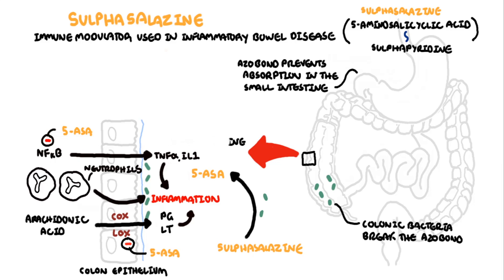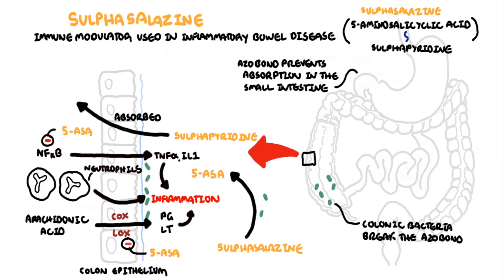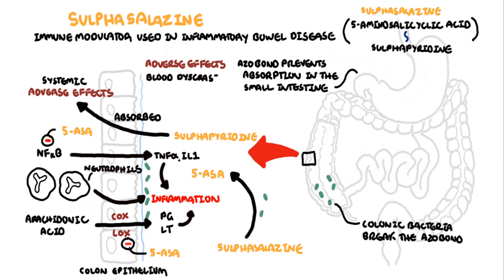The other half of sulfasalazine, sulfapyridine, is absorbed, metabolized in the liver, and eventually excreted in urine. Sulfapyridine is responsible for exerting the systemic actions and the adverse effects of sulfasalazine. Serious side effects to remember, aside from nausea and vomiting, include blood dyscrasia, hepatitis, and hypersensitivity reactions.